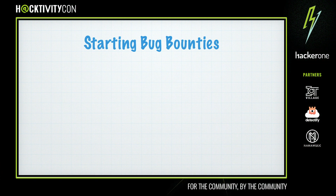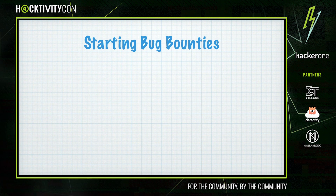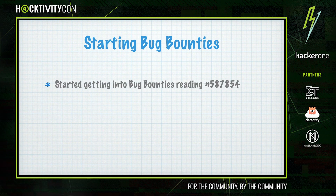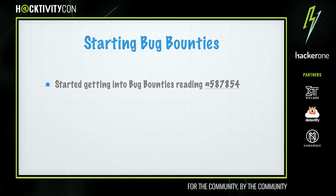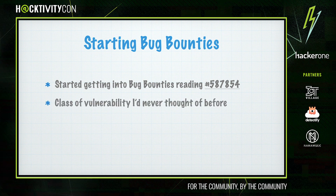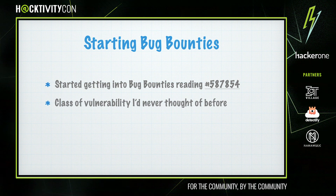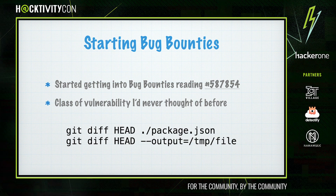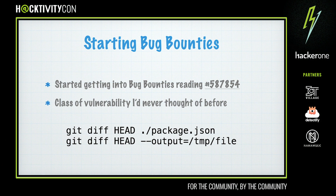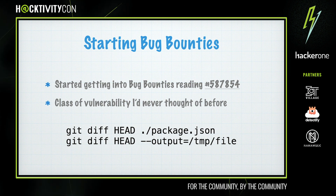My bug bounty journey really began about June last year when I read an excellent report on HackerOne about overwriting files in GitLab by injecting git command line options. It was a whole class of vulnerabilities I'd never really thought of before — even if you sanitize all the input correctly and use the correct methods for running a command, it's still possible that if an argument starts with a dash, it could be interpreted as an option to the command instead of a path or file name.